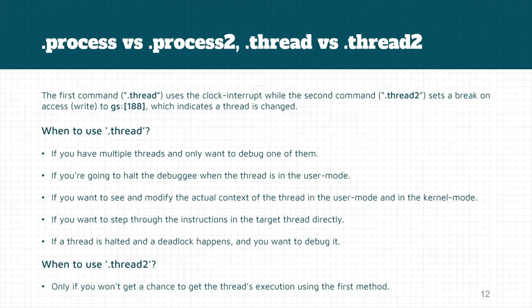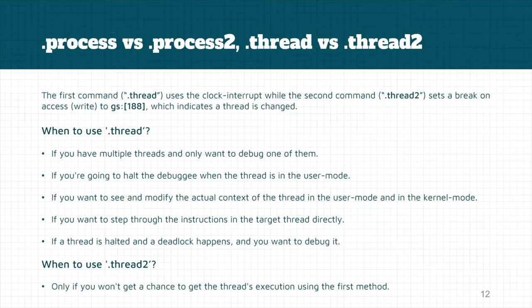If there's a write on this address, HyperDbg interprets it as a thread change and checks whether a specific thread is present. If you want to debug only one thread among multiple threads, you should use .thread instead of .thread /2. If you want to halt the debugger while the thread is in user mode or kernel mode in the middle of execution, use .thread — this is not possible with .thread /2. The actual context (registers and memory) is visible using .thread, while with .thread /2 it is not visible — you have to step some instructions to perform the context switch and reach the actual target.